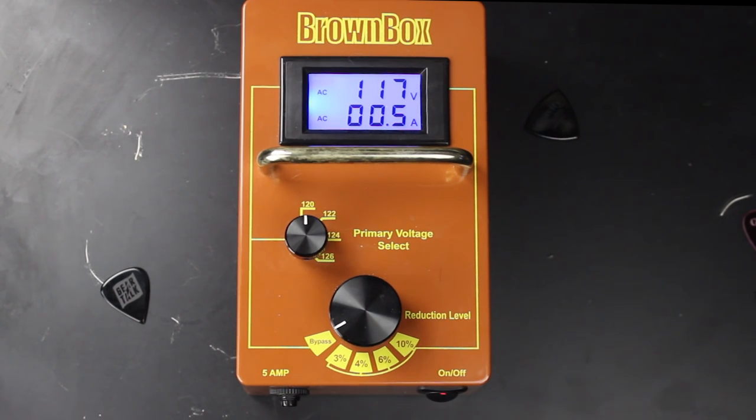One thing to note, primary voltage - when you plug a brown box in, it'll tell you basically what your wall voltage is, whether it be 120 all the way up to 126, so you can adjust that accordingly. Since my voltage is at 119, 120 typically, I'm just going to leave it at 120 this whole demonstration.